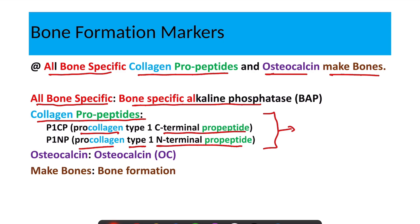The next marker in the mnemonic is osteocalcin, which is also used as a marker for bone formation. These are the major markers for bone formation, and you can easily remember them using this mnemonic.